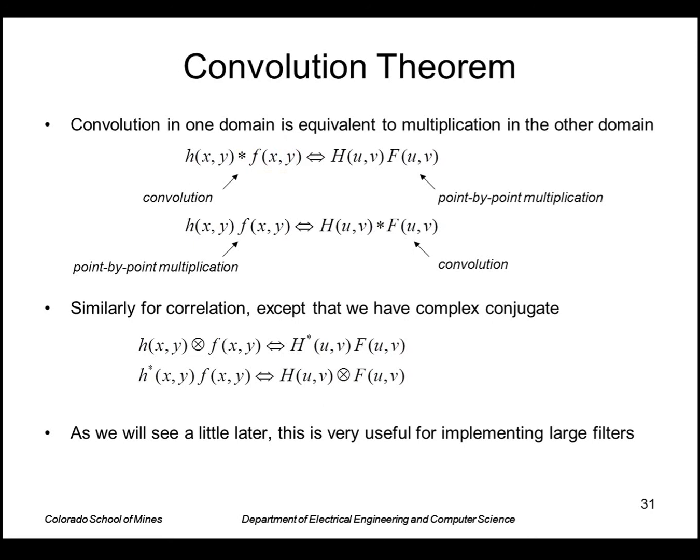that has a Fourier pair of the transform of the filter H(u,v) multiplied point by point times the transform of the image capital F(u,v). And you can go the other way. A convolution in the frequency domain is equivalent to point by point multiplication in the spatial domain.